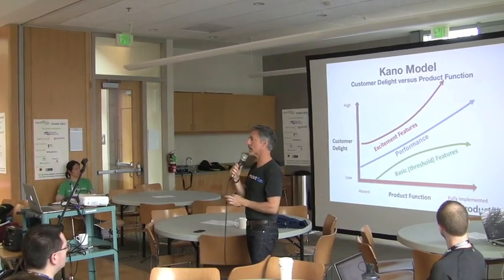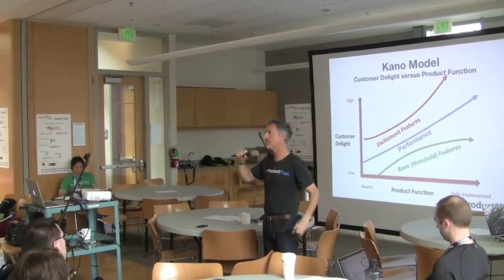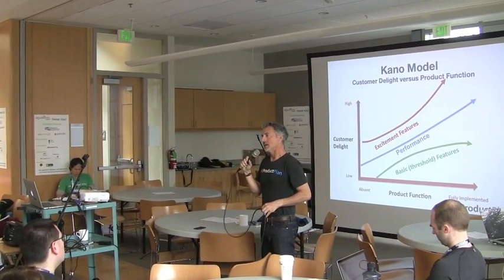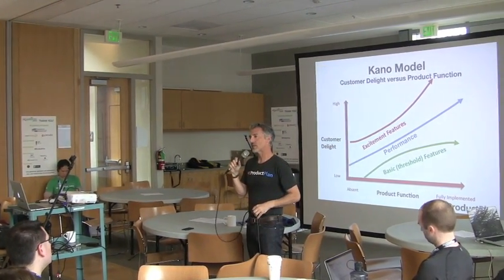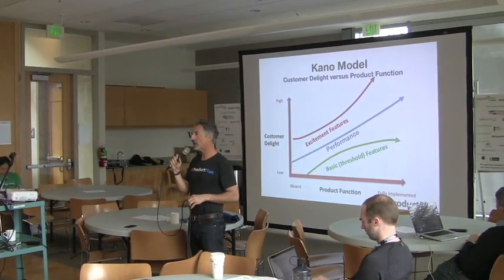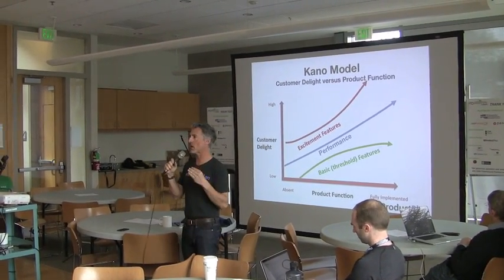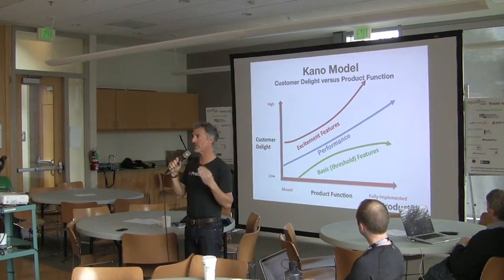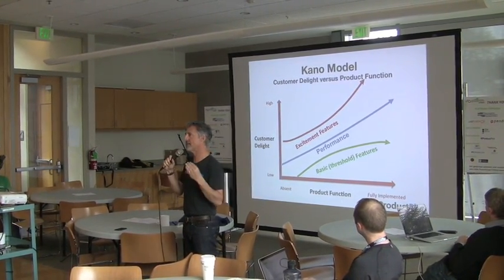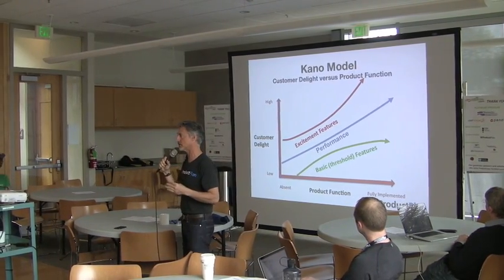The next thing is the Kano model. This one's an interesting one because it's kind of hard to quantify, but it's a great framework for thinking through features that you might want to build.